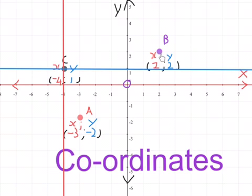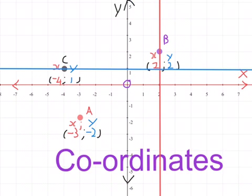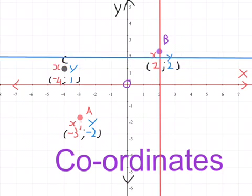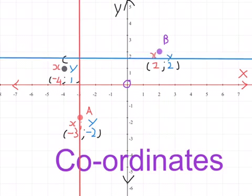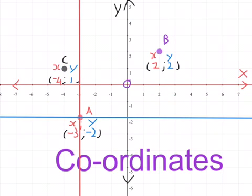For this purple coordinate over here, my x value is 2, yes, and my y value is 2. And that's where the coordinate comes from. For this dot over here, my x value is minus 3, and my y value is minus 2. And that's why the coordinate is written like that.